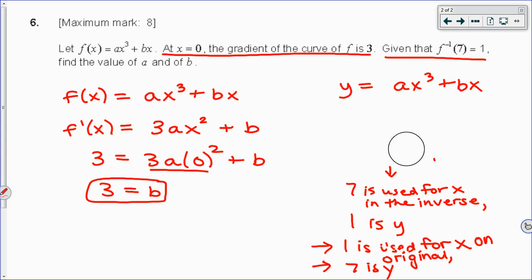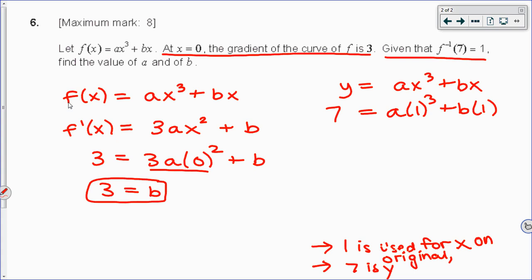So I can go back up to the original function. I'm going to erase everything that's not necessary now. And I can replace 1 for x and 7 for y. So whatever they've given you as x and y on an inverse, you can switch them on the original function. You can now plug in what you know for b, because we got it as 3. This is just 1a. This is 3 times 1, which is 3 subtract 3, and 4 equals a.